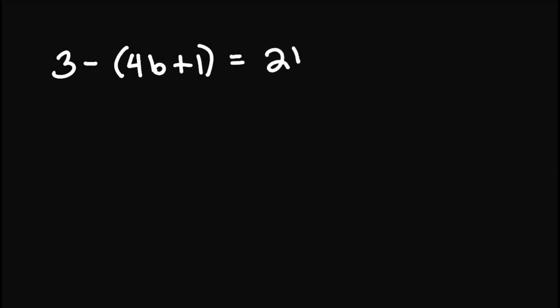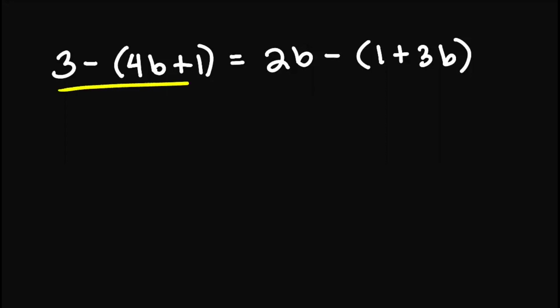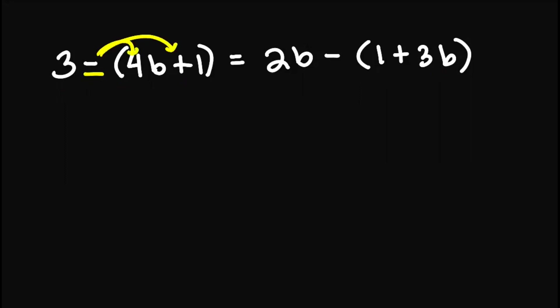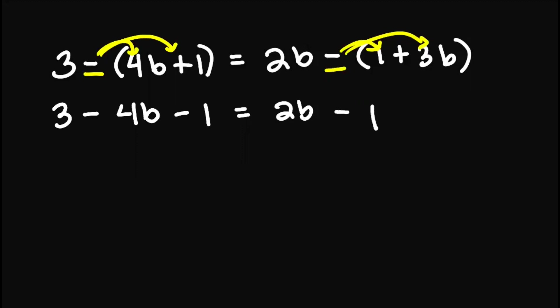Let's have this next example: 3 minus 4b plus 1 equals 2b minus 1 plus 3b. Now from here, we can't really move anything yet since it's kind of complicated on either side of the equation. So what we can do first is to simplify this side and this side as well. So first, we distribute this negative sign out here. We will have 3 minus 4b minus 1 equals 2b minus 1 minus 3b.